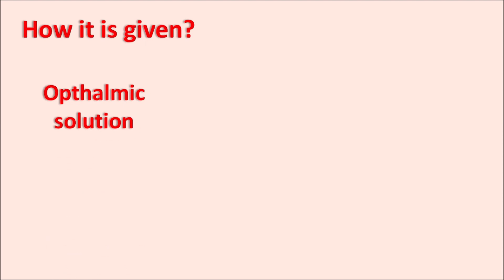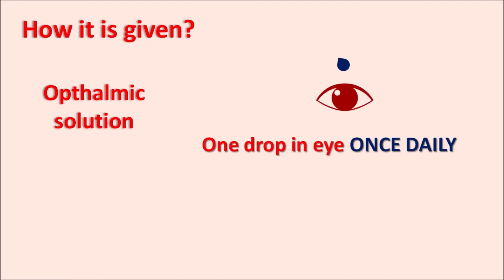How is it given? This drug is available as an ophthalmic solution and is only for ophthalmic use. One drop should be administered into the eye once daily. This drug is available at a strength of 2.5 mg/mL. A five-minute gap should be maintained between two different ophthalmic medications, and after 10 minutes the contact lens can be restored into the eye.